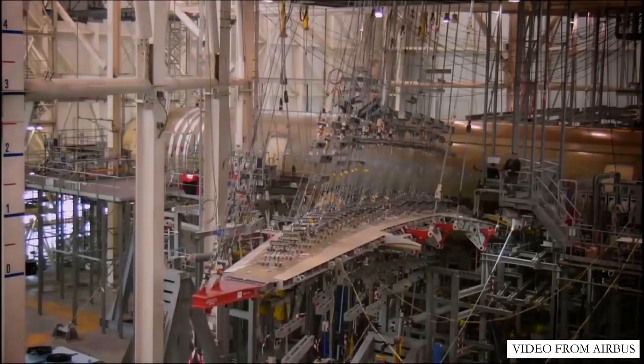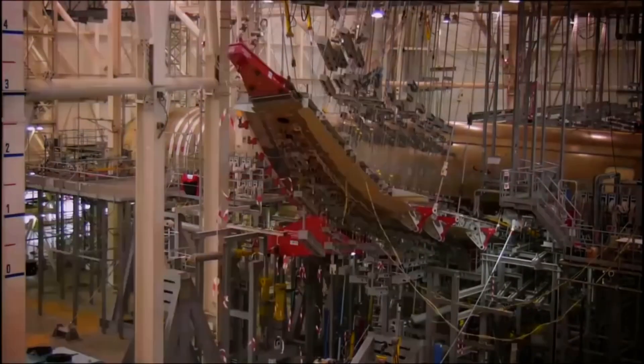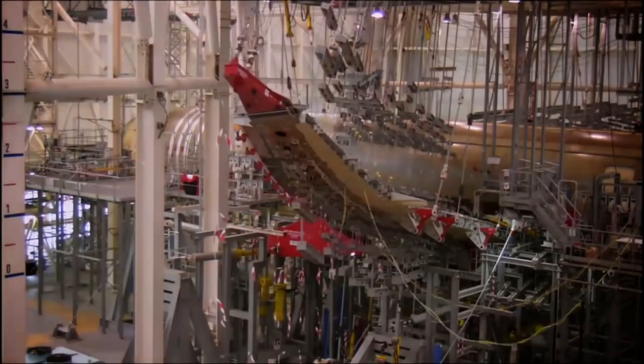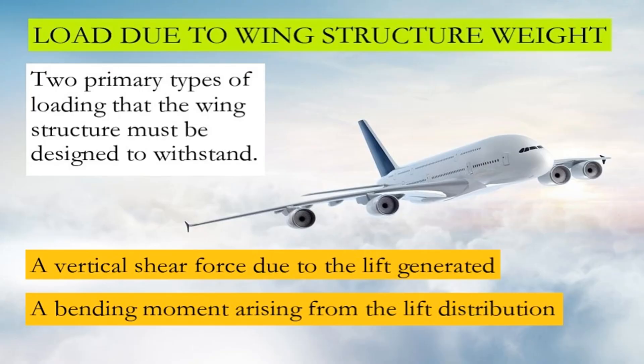Here is how the wings of the Airbus have to live through static stress testing, giving you an idea of just how much these wings can flex. The resulting vertical force distribution over the span of the wing causes the wing to flex and bend upward when loaded. There are two primary types of loading the wing structure must withstand: a vertical shear force due to lift generated, and a bending moment arising from the lift distribution.